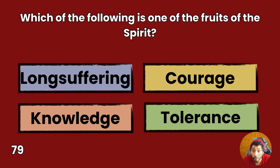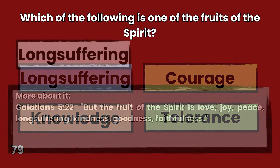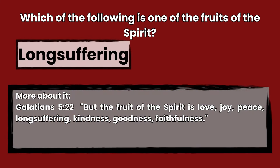Question 79: Which of the following is one of the fruits of the Spirit? Long-suffering, courage, knowledge, or tolerance? Answer: Long-suffering. Galatians 5:22 — But the fruit of the Spirit is love, joy, peace, long-suffering, kindness, goodness, and faithfulness.